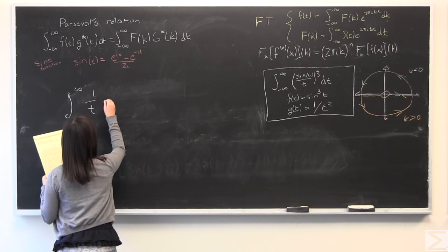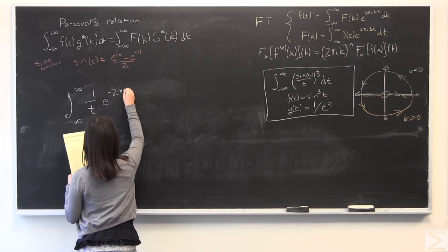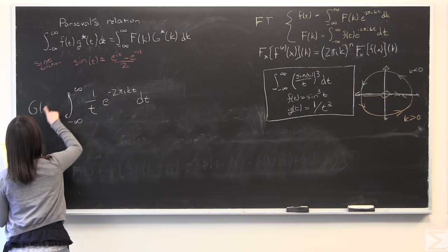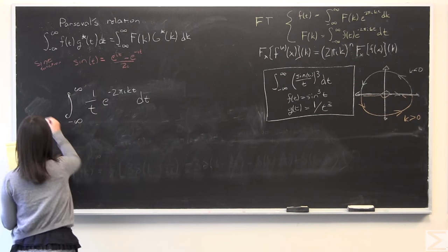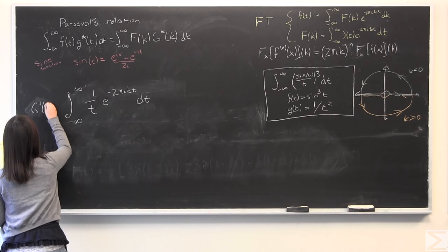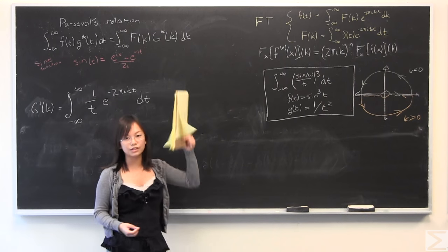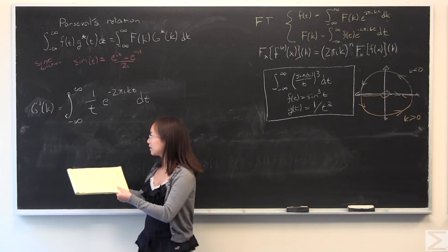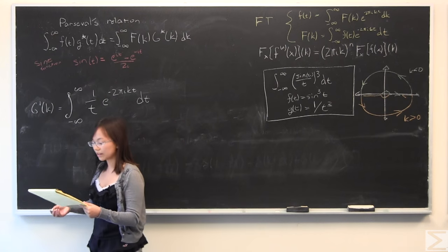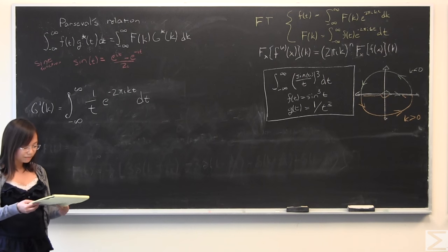So I will write down what we're looking for first. So like I said, I'm looking at 1 over t, we'll call it g prime of k, prime meaning it's not the g(k) in the problem, but it's just something we're going to use to get there in this case.